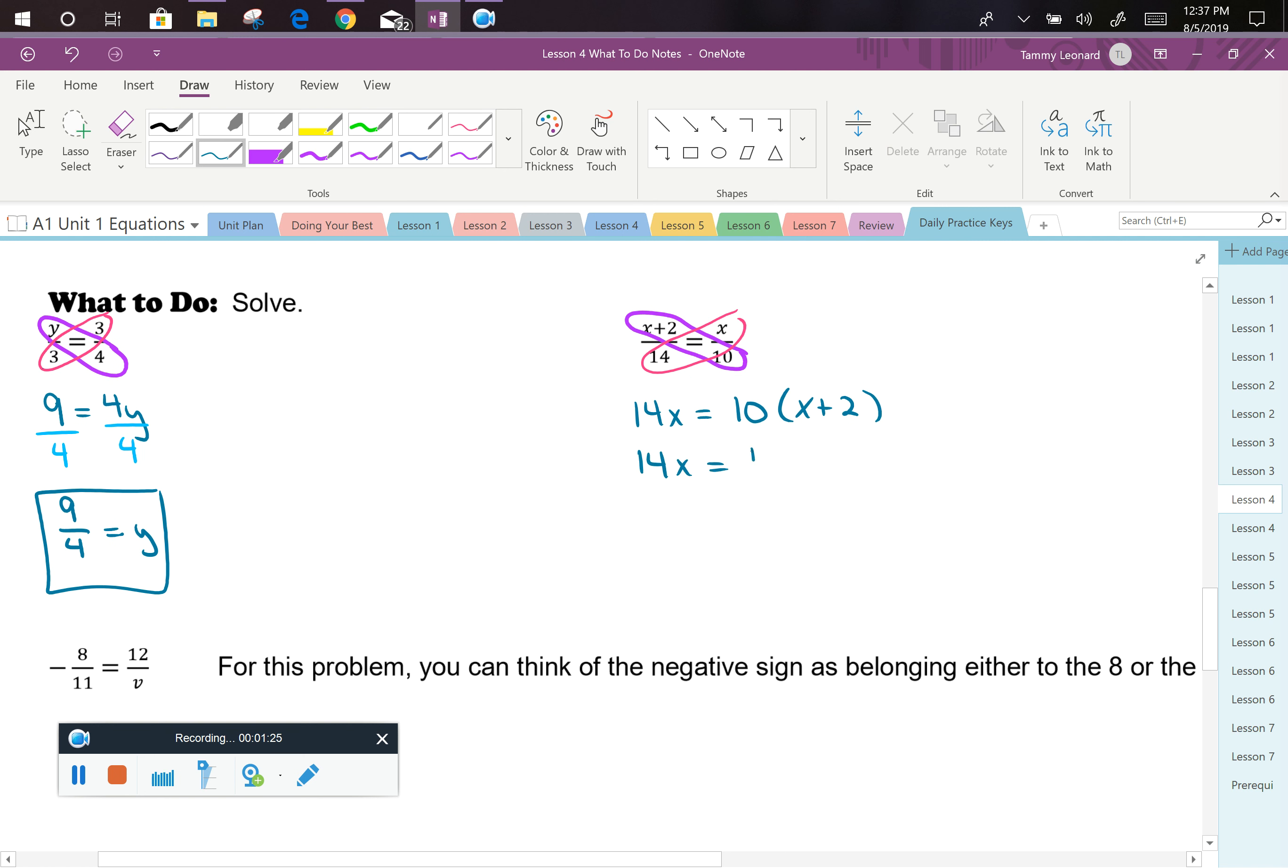So I have 14x is equal to 10x plus 20. Now I can solve like a regular equation. I would like all of my variables on one side, so I'm going to subtract 10x from each side. That leaves me with 4x equals 20. When I divide both sides by 4, I can see that x is equal to 5.